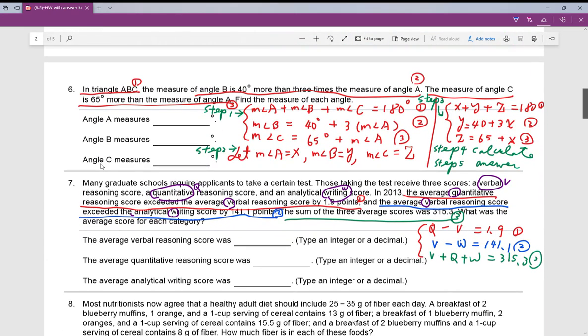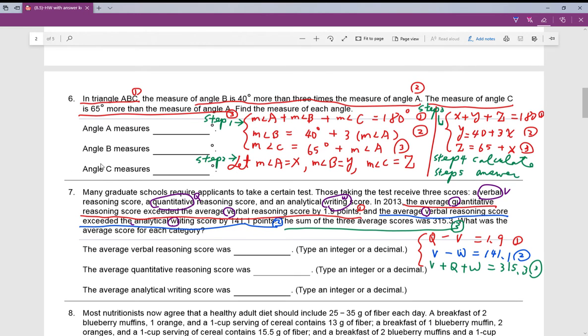Number 6, same thing, and this is a geometric question. When you see in a triangle ABC, that's already the first equation. Why? Because three angles plus together in the triangle is total 180 degrees. So this is given by definition of triangle.